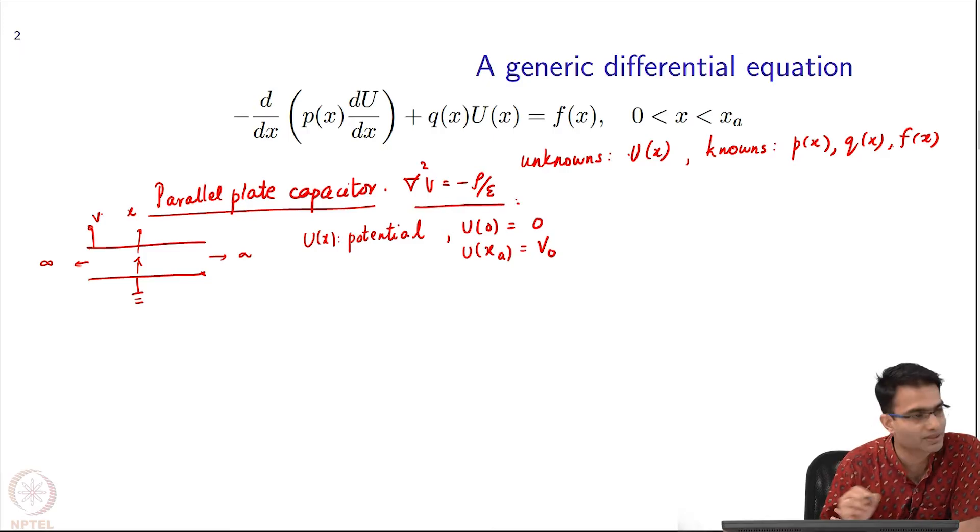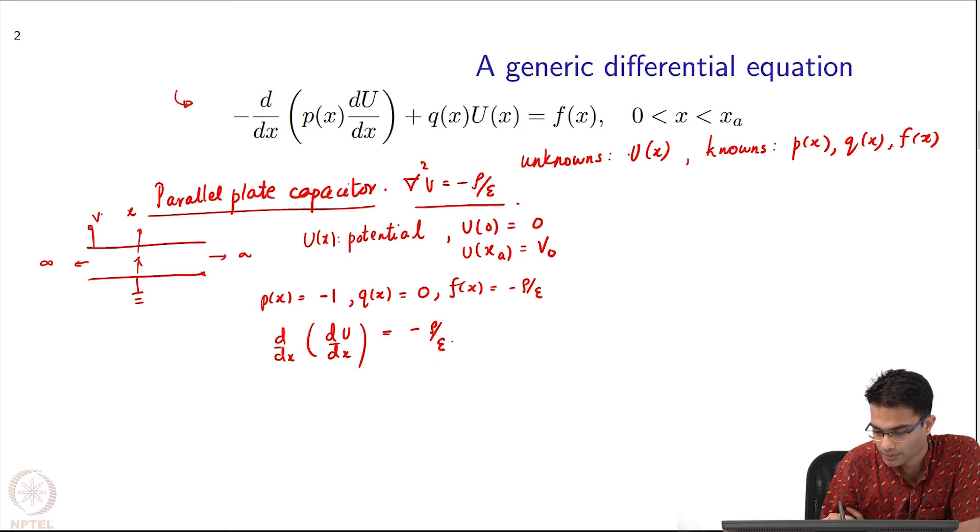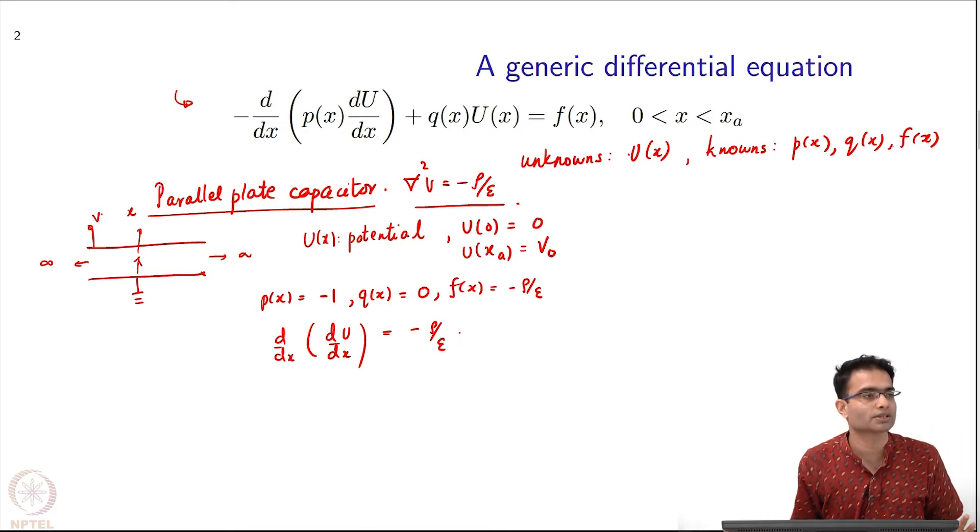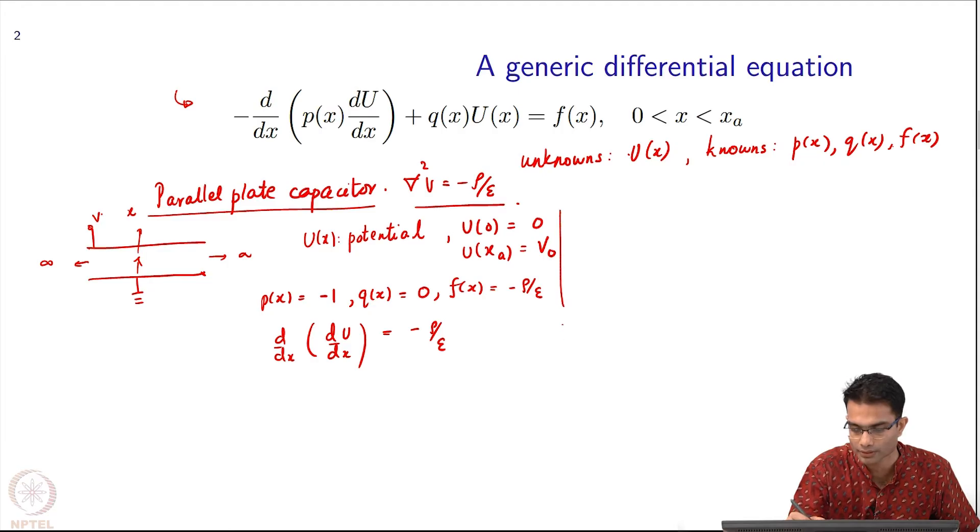I know that the differential equation is this. Can I fit it into this generic form? I can. What would I have to do? For example, what will be the value of p(x)? P(x) will be minus 1. Then q(x) will be 0. And f(x) will be minus rho by epsilon. Then that will become d by dx d u by dx equals minus rho by epsilon. Nothing new here, just saying that this generic looking equation can capture a lot of problems in electromagnetics, that is why we look at it.